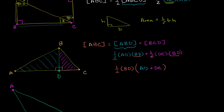What is AD plus DC? AD is that length and DC is this length — if you add those two lengths together, you get the length of AC. So the area of triangle ABC is equal to one half times AC times BD. This is just one half times our base AC times our height BD. So that's pretty cool — it worked for right triangles, and if we know the height of a triangle, the area is still one half times base times height.